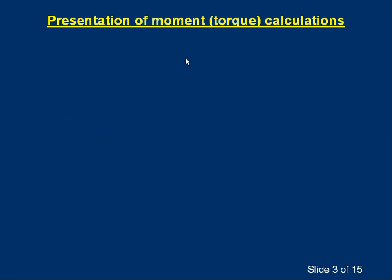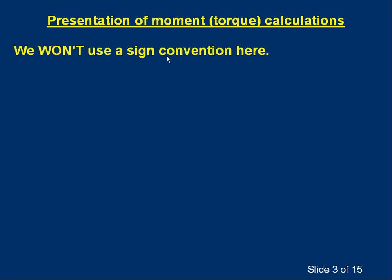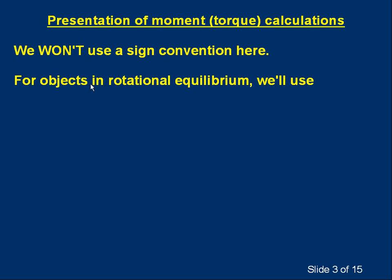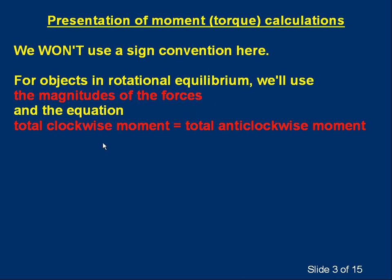Similarly, when we do moment or torque calculations we need a standard way of presenting them. We won't be using a sign convention for moments — some people call clockwise moments positive, but we won't. Instead, for objects in rotational equilibrium, we'll use the magnitudes of the forces and the equation: total clockwise moment equals total anti-clockwise moment.